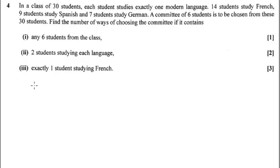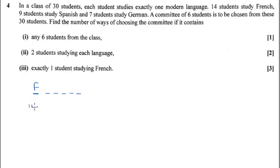Part four. We need to definitely have one person doing French. The other people, it doesn't matter if they do Spanish or German, but those five people aren't allowed to be people that study French. So we have to choose one French person, and we've got 14 French people to choose from.